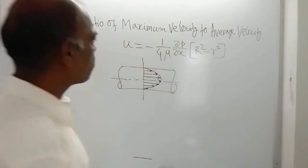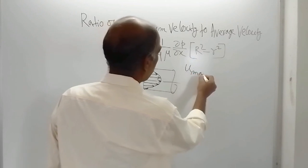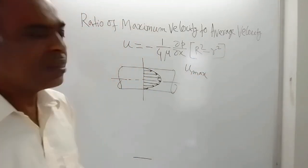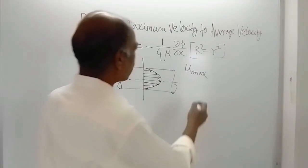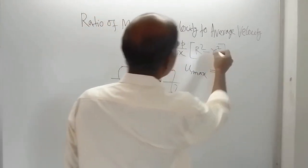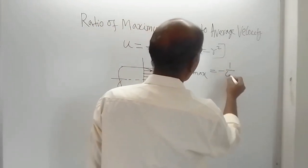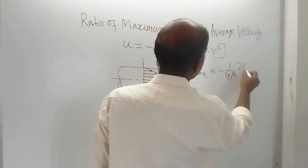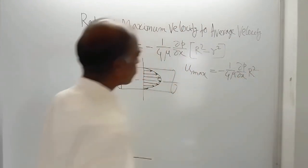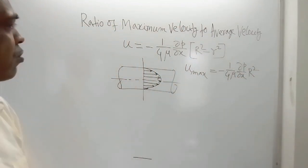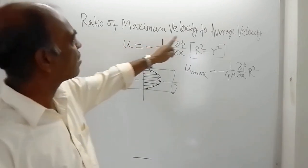At the centerline, the velocity will be maximum. That maximum velocity is obtained by putting small r equal to zero. So the maximum velocity is: U_max = minus 1 by 4μ · (dP/dX) · R².